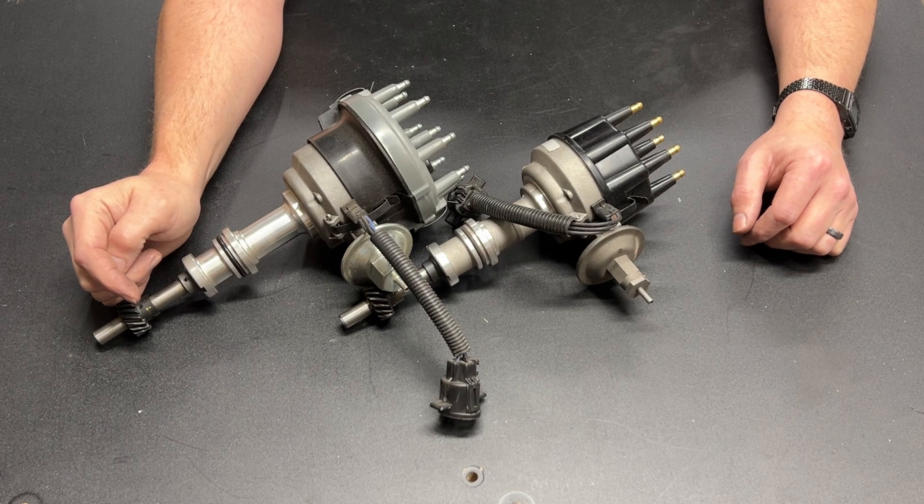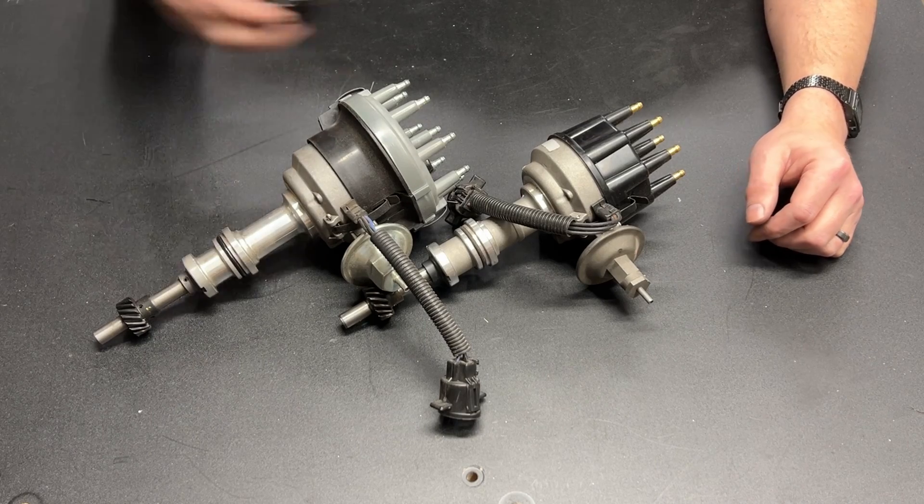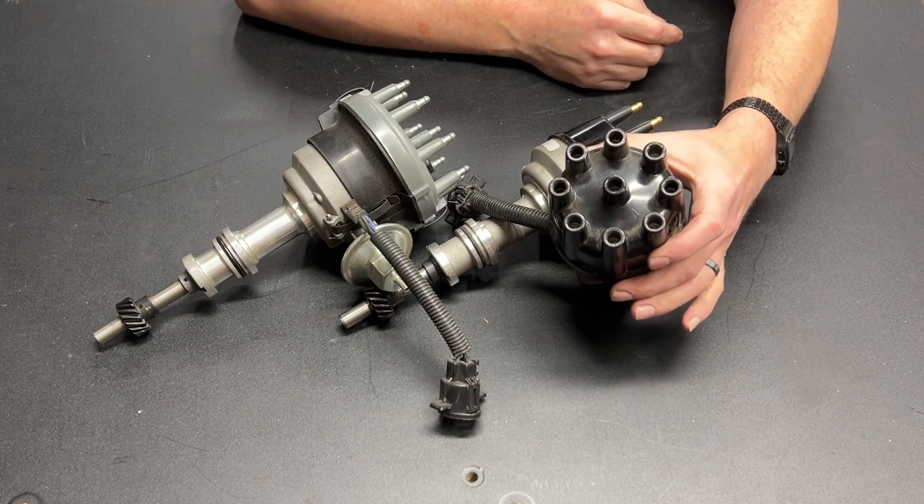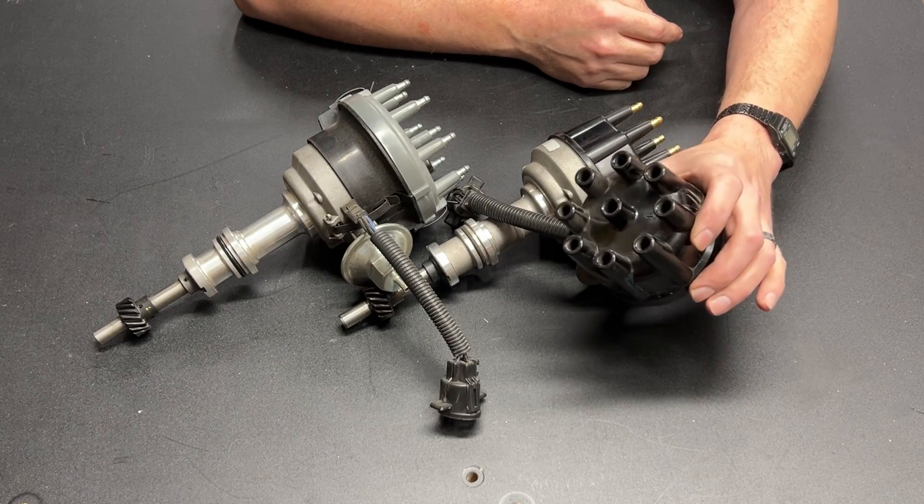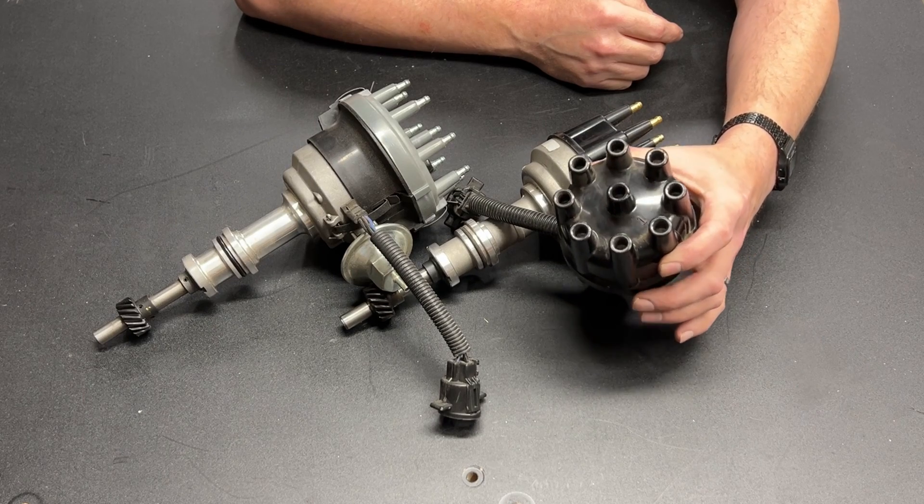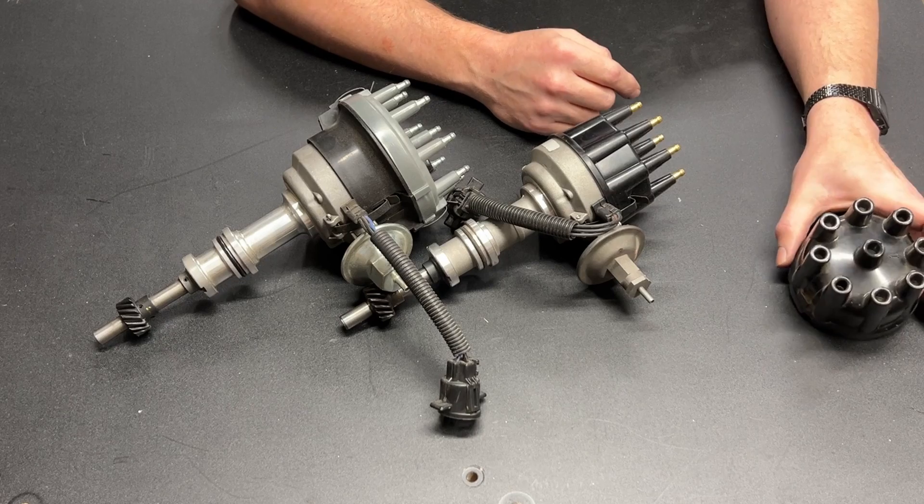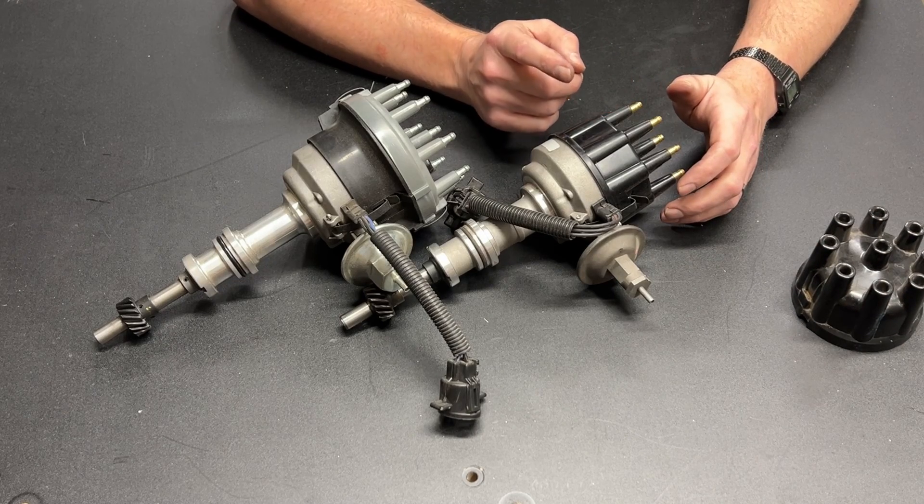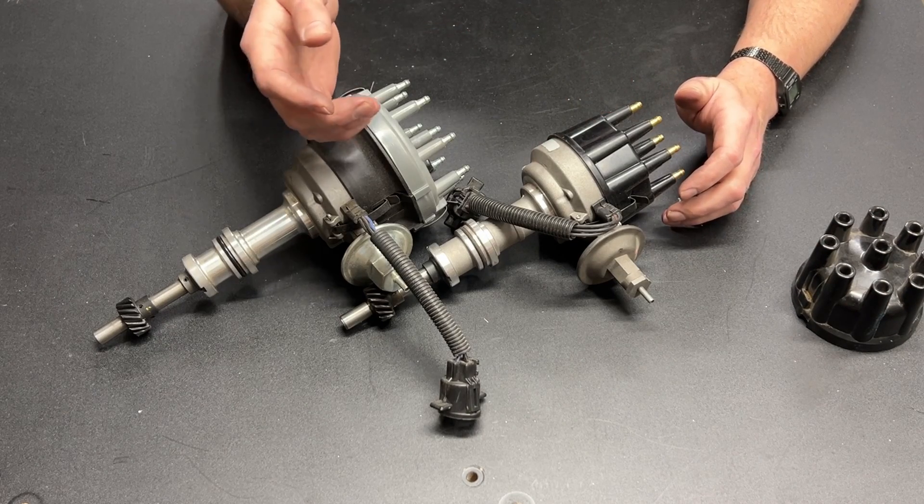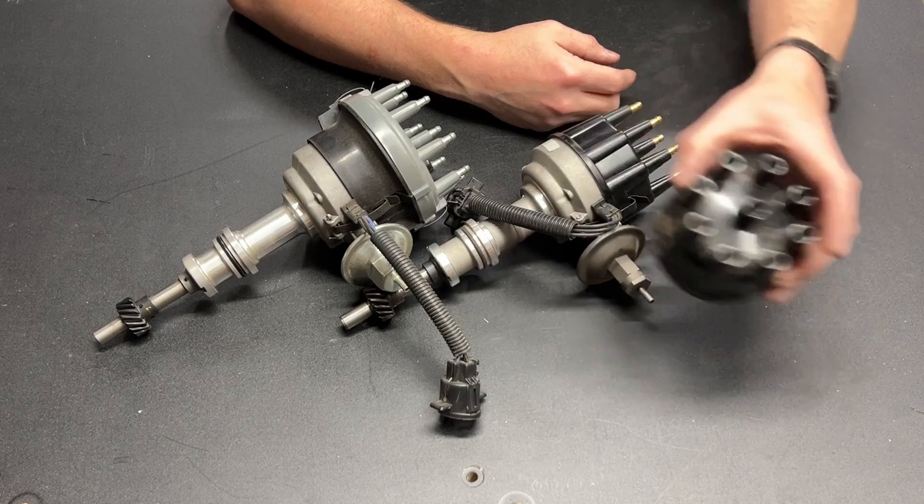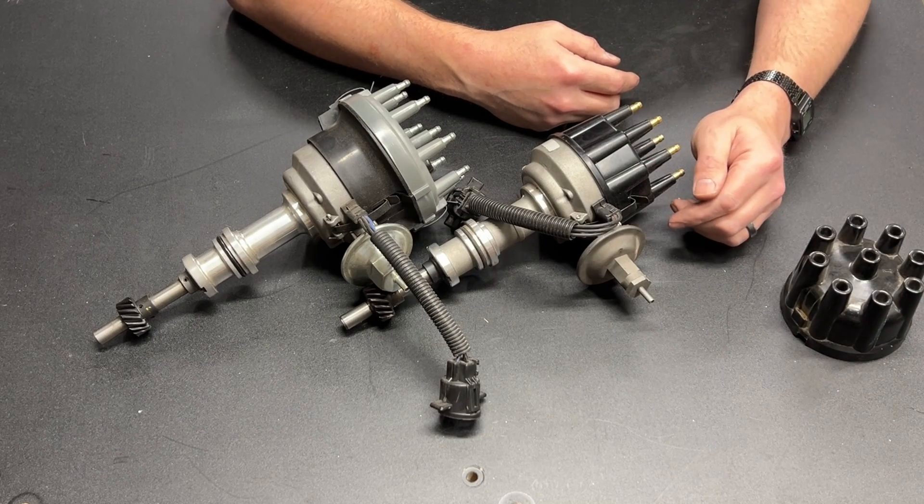Greetings fellow DIYer and welcome to my video. So Ford started with this distributor cap on points ignition systems. This is your female cap, very typical on a point system, and it will fit on a DuraSpark distributor. When they upgraded to electronic ignition, they used this same cap for the first generation DuraSpark.